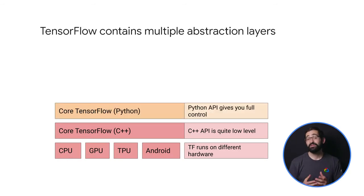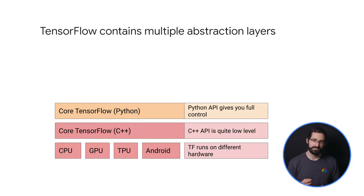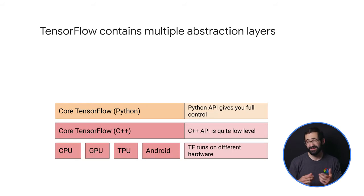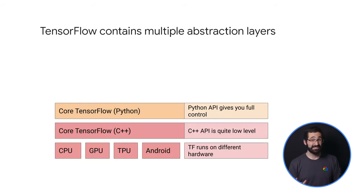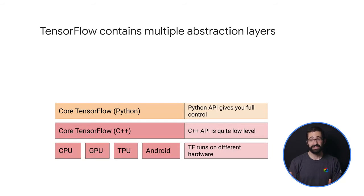The core Python API is what contains much of the numeric processing code — add, subtract, divide, matrix multiply, et cetera. Creating variables, tensors, getting the right shape or dimension of your tensors and vectors — all of that is contained in the Python API.